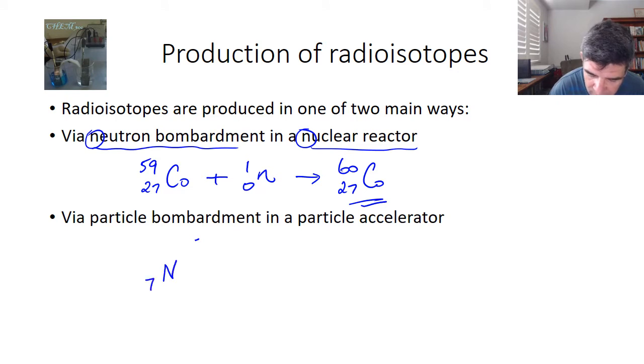So if we start with nitrogen, a stable isotope of nitrogen, and we fire in an alpha particle, which is one of the more common particles, then what we find is that 7 and 2 is 9 and 14 and 4 is 18.